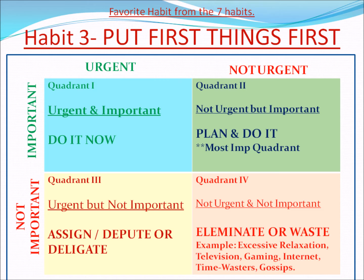The next quadrant — the most important quadrant of all — is plan: not urgent but important. Plan and do it, meaning we have so much time to do it, we can do it perfectly. Quadrant 3: urgent but not important — assign to others or delegate. Quadrant 4: not urgent and not important — eliminate or waste. Examples: excessive relaxation, television, gaming, internet time wasters, and gossip. This is Habit 3, Put First Things First.